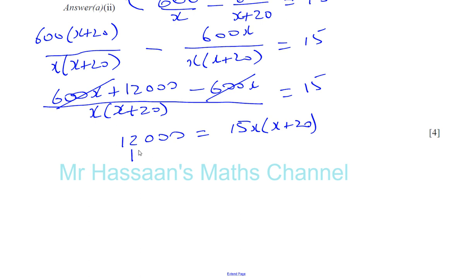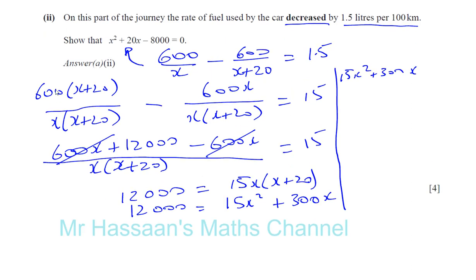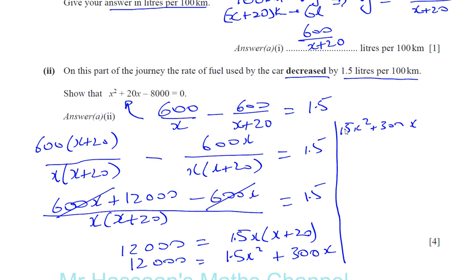Expanding gives 12,000 equals 1.5X squared plus 1.5 times 20 which is 30, so 1.5X squared plus 30X. Bringing everything to one side: 1.5X squared plus 30X minus 12,000 equals zero. Note: it is 1.5, not 15 — be very careful with that decimal.